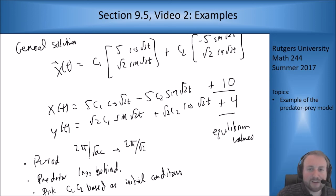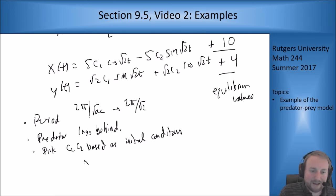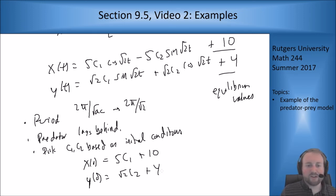We're going to pick c1 and c2 based on initial conditions, i.e., x(0) is 5 c1 plus 10 and y(0) is root 2 c2 plus 4, because the sine terms vanish at t equals 0.